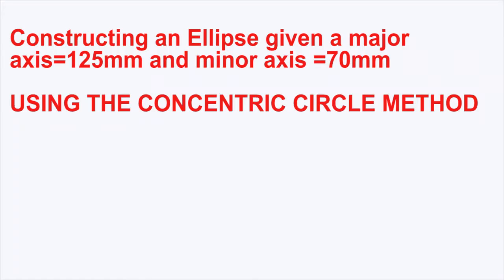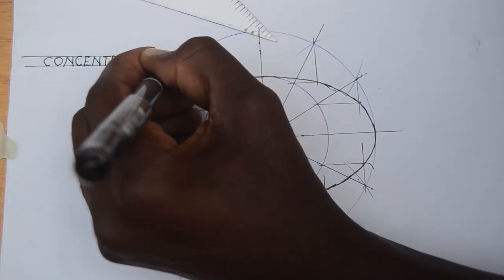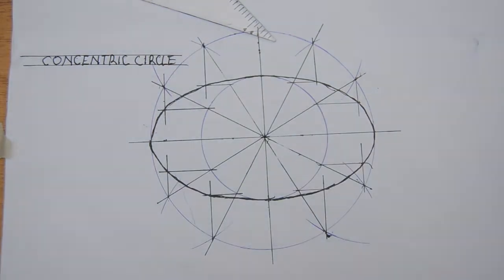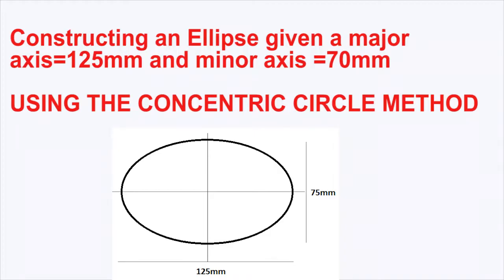Welcome to this video. A quick shout out to my subscribers - we made 1000! If you're here for the first time, feel free to do the same: like, subscribe, and click the notification bell. We are constructing an ellipse given the major and minor axis using the concentric circle method.